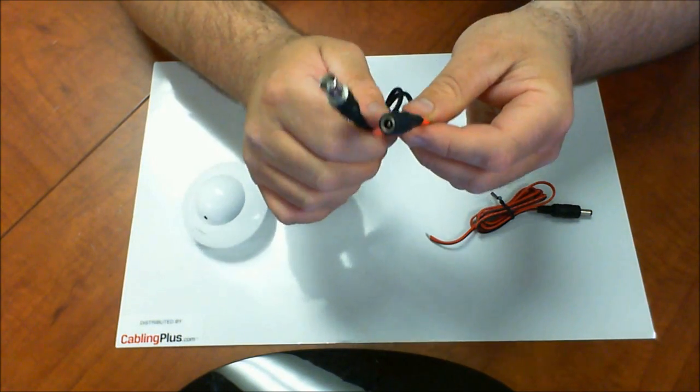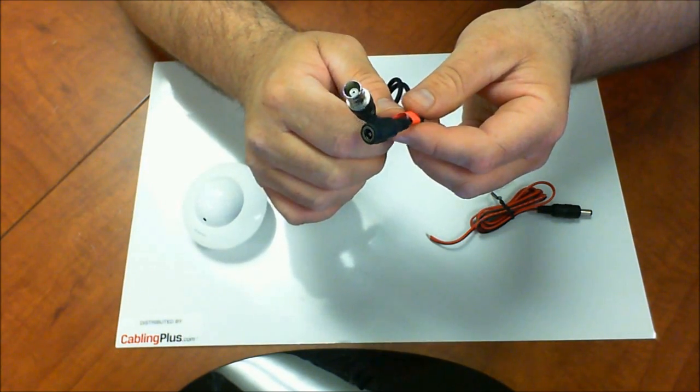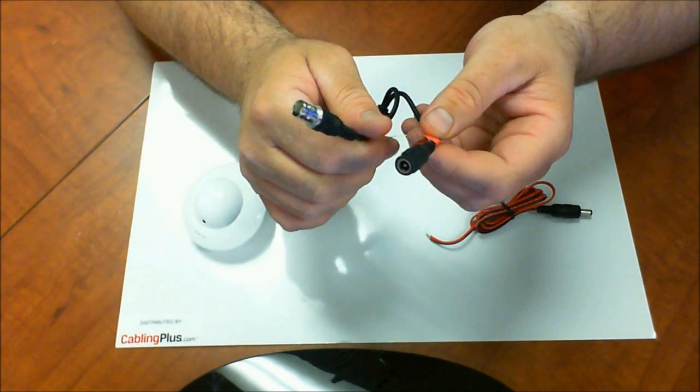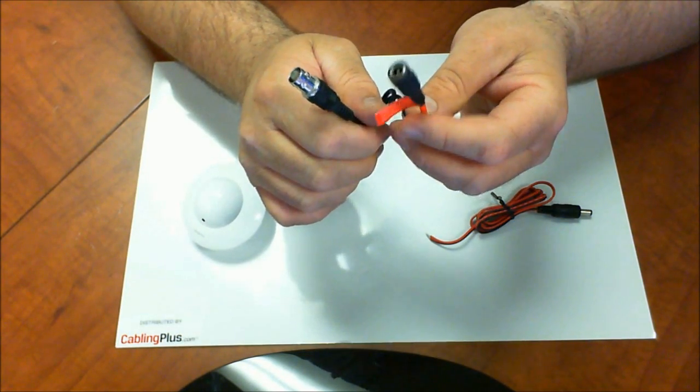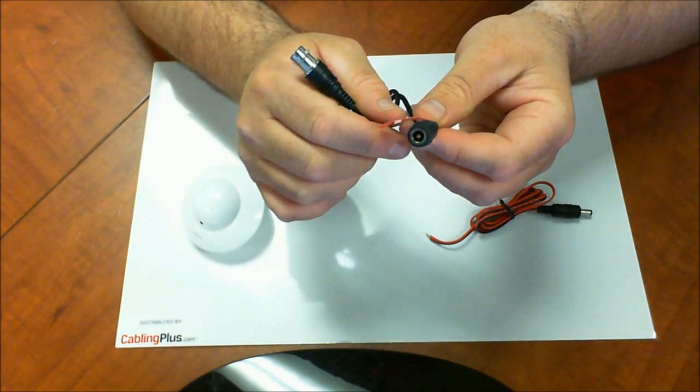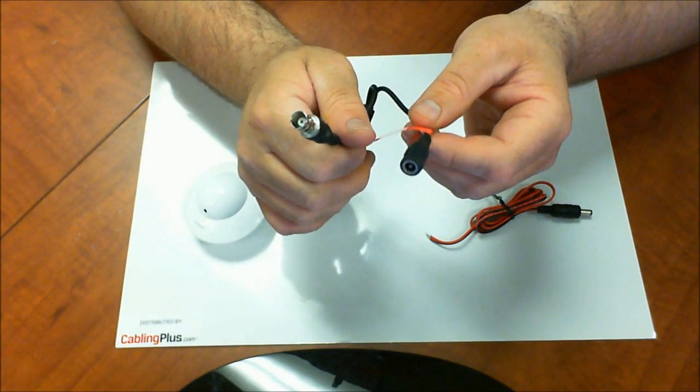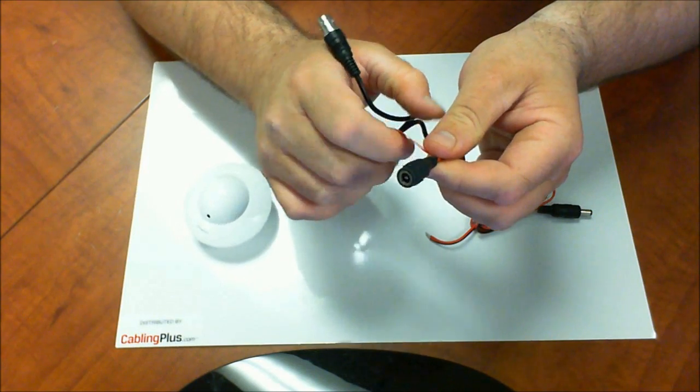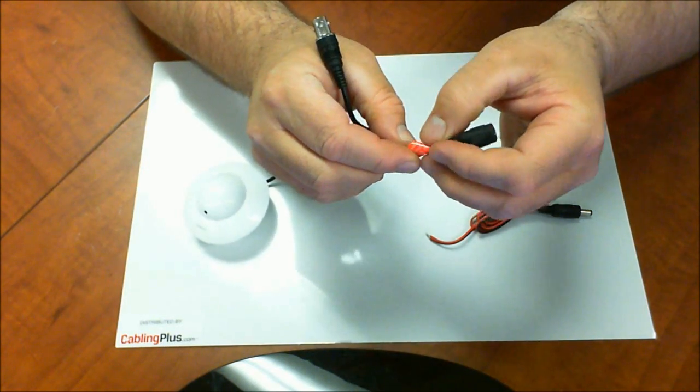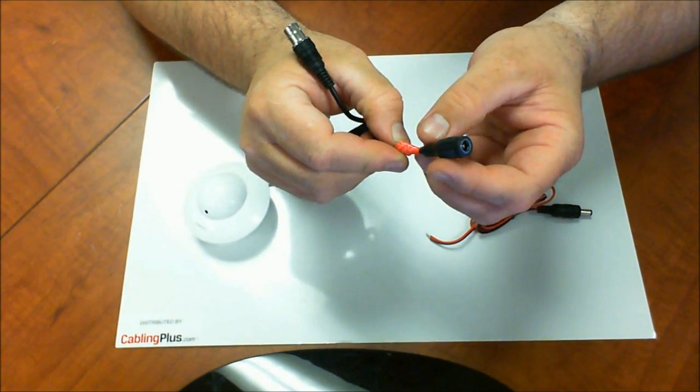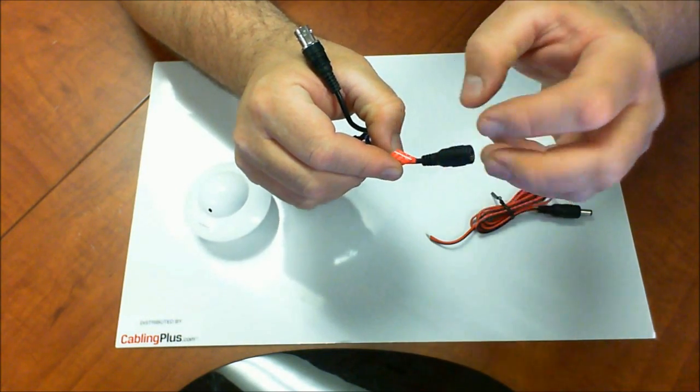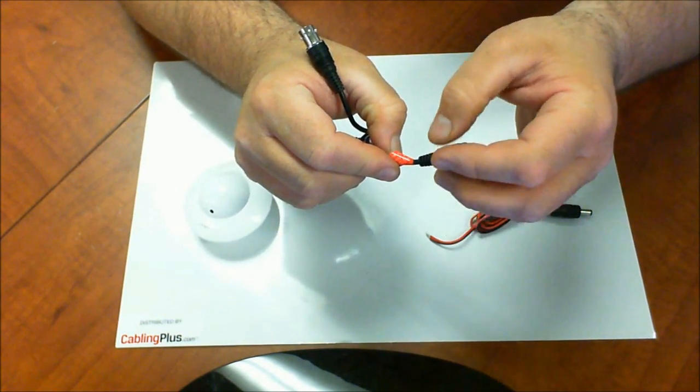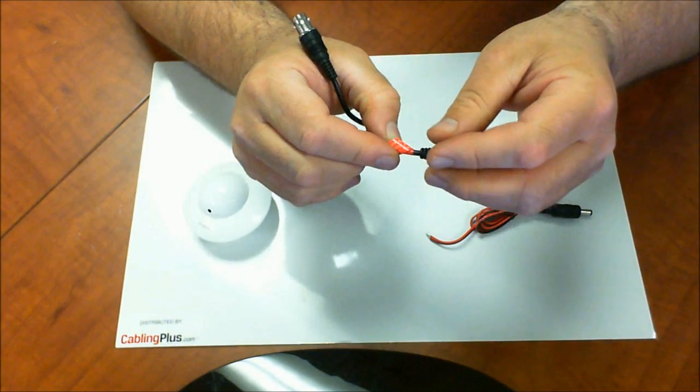A lot of times what people do is they get this, they open up the box and they take out their camera and the first thing they think about doing because they're 18-2, usually they're running like a Siamese cable, the first thing they decide to do is they cut this. They cut the power and then they pull the pairs out and they attach them to their two conductor, their 18-2 or their 16-2 or whatever power cable they're using.